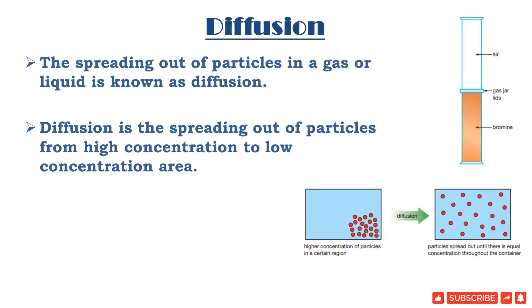Here you can see there are two jars. One jar has bromine inside it, which has a dark brown color. The upper jar has air inside it. These two jars are separated through a glass lid. When the glass lid is taken out, these two gases get mixed together.